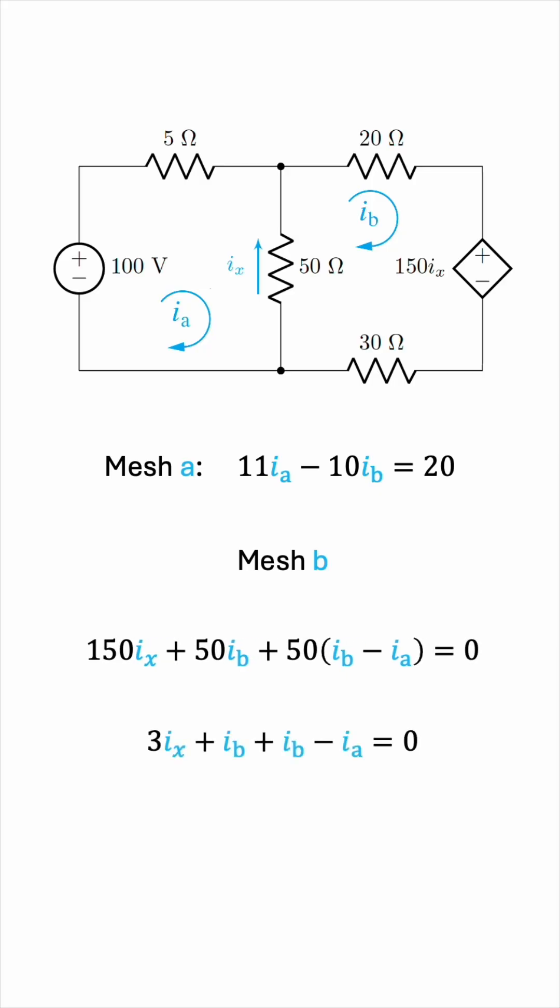Divide everything by 50. Group like terms. And now we see a problem, because the equation involves Ix, when we only want it to involve Ia and Ib. So we have to express Ix in terms of the two mesh currents. In order to do that, let's zoom in and have a look.